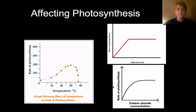There are some things that affect photosynthesis. Temperature has an effect on photosynthesis. If you look at this graph right here, you'll see that the rate of photosynthesis depends on temperature. As the temperature goes up, the rate of photosynthesis goes up to a certain point. But then if it gets too hot, the plant can't take it and the rate of photosynthesis goes down.